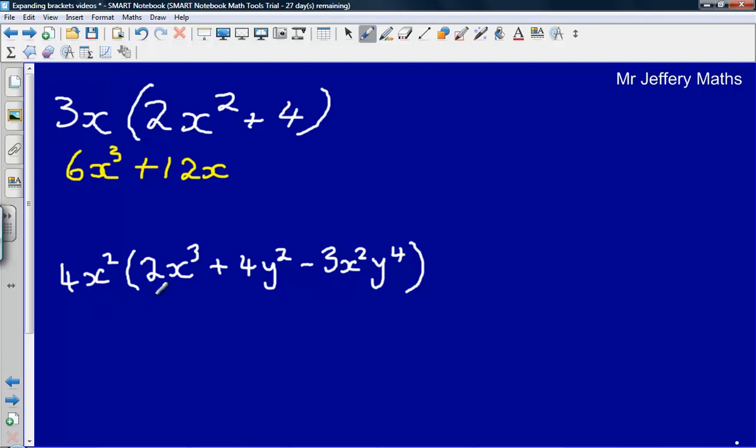So 4x squared multiplied by 2x cubed will leave me with 8x to the power of 5. Multiplying the numbers first, 4 times 2 gives me the 8, x squared multiplied by x cubed gives me x to the power of 5.